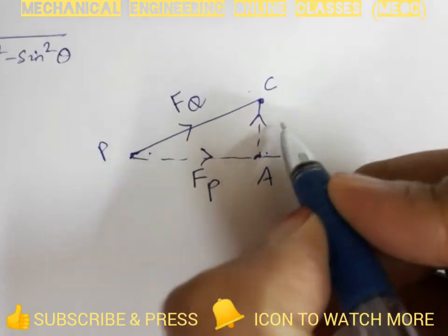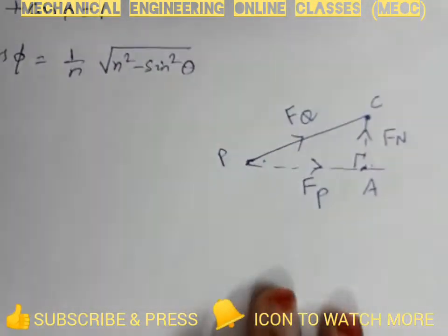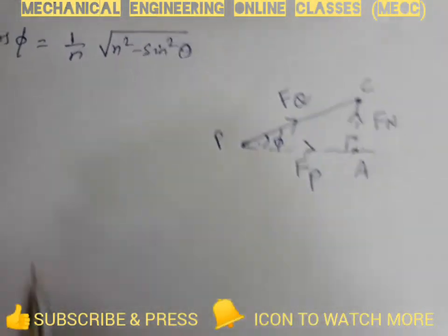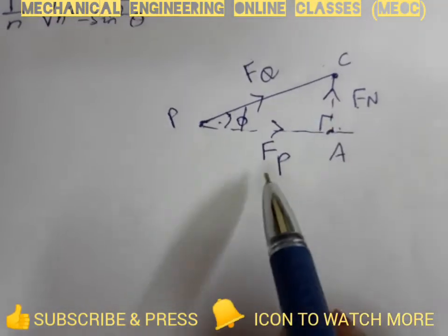From this triangle, this figure, we know that tan phi is fn by fp.